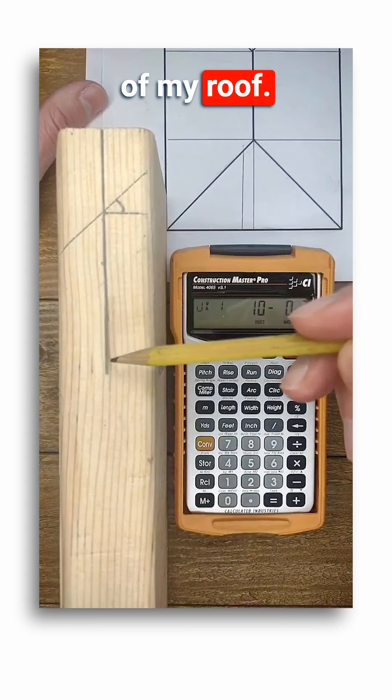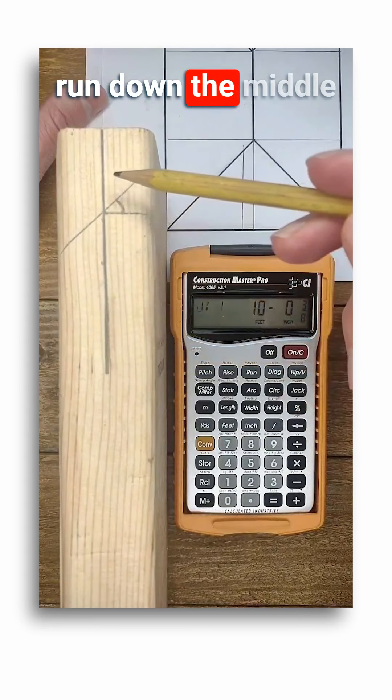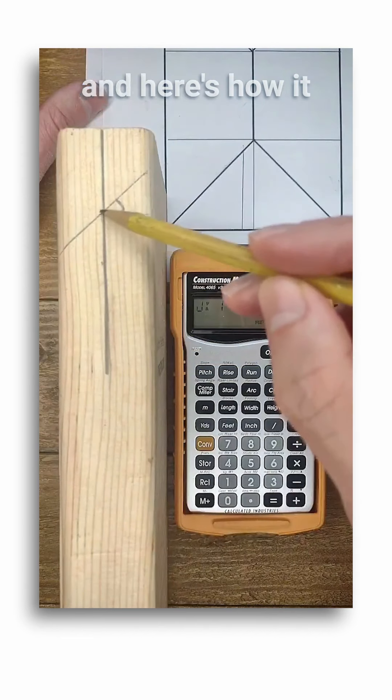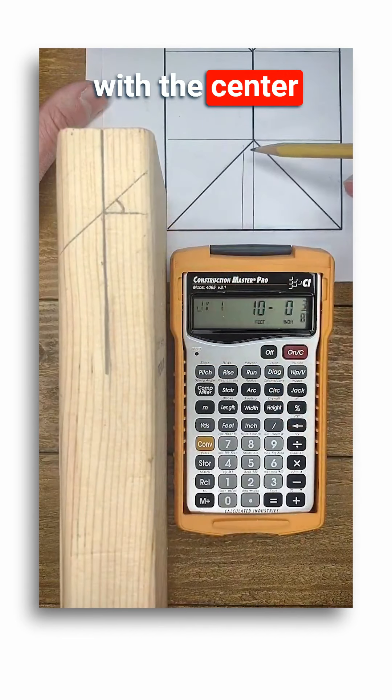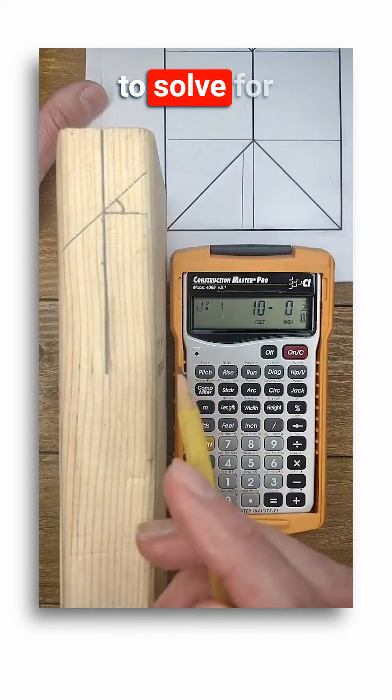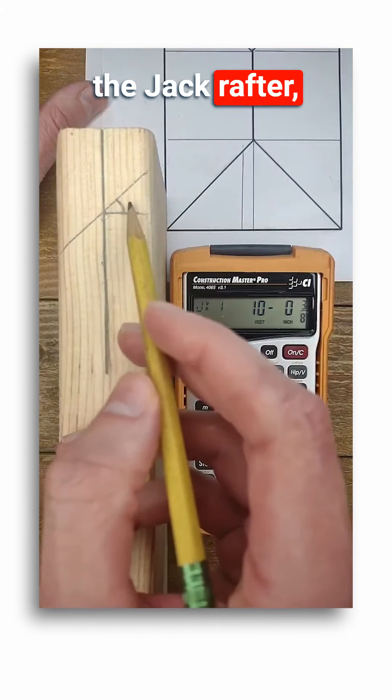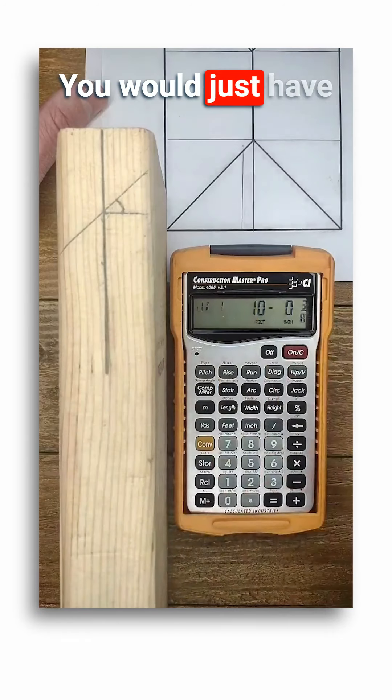That length would be the theoretical length of my first jack rafter as it sits in plane with the pitch of my roof. So that length would run down the middle of my jack rafter, and here's how it would intersect with the center of the hip rafter.